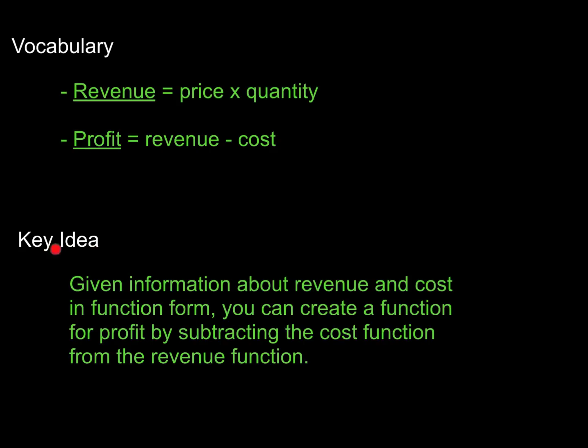So the key idea that we have here is that given information about the revenue, how much you make, and the cost, how much you spend, in function form, so in other words, some sort of function, we can create a new function for the profit by subtracting the cost from the revenue, as we see up here. And the kind of important thing to note is that revenue is price times the quantity. Well, what's the cost usually? The cost, there's usually some cost to make each one of these. So both the revenue and the cost usually depend on the quantity. And so that's an important piece to note.